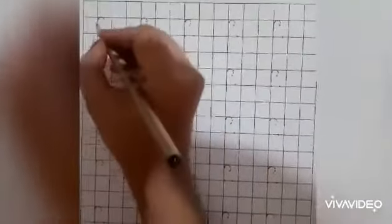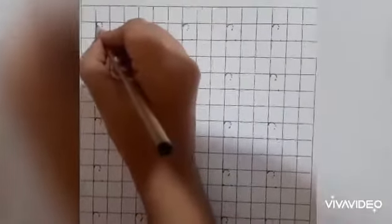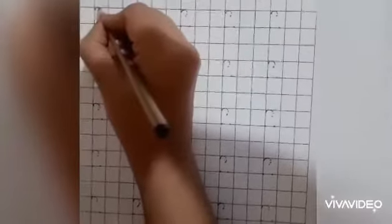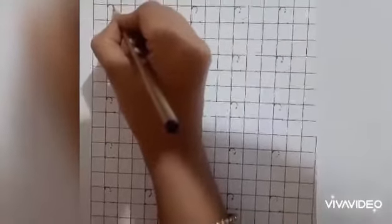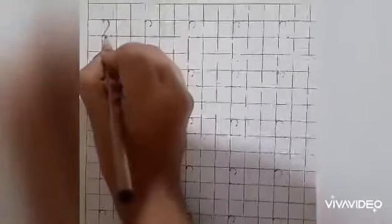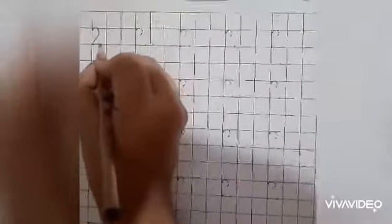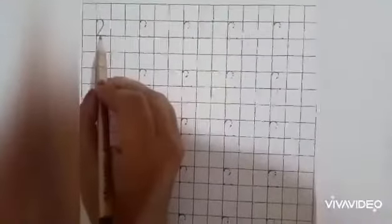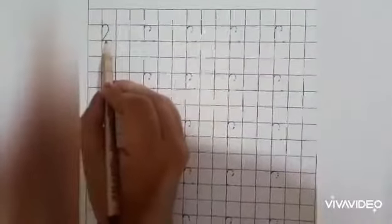First, keep your pencil here, then make a half a round like this, then make a slanting line to the bottom and then sleeping line. Very nice. Now, tell me which number is this? This is number 2.